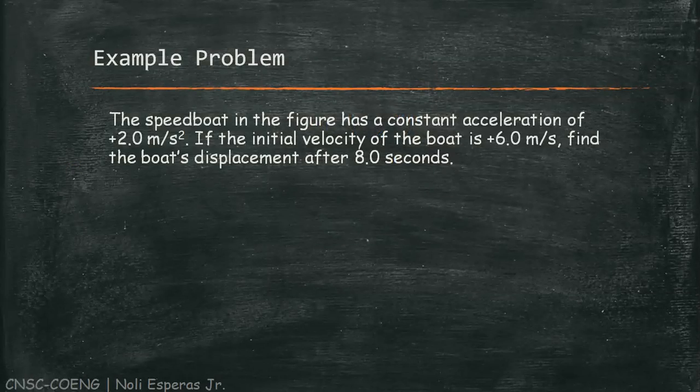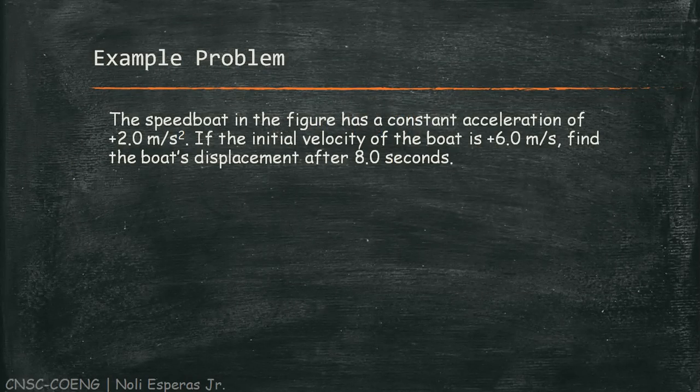The speedboat in the figure has a constant acceleration of 2 m/s². If the initial velocity of the boat is 6 m/s, find the boat's displacement after 8 seconds.